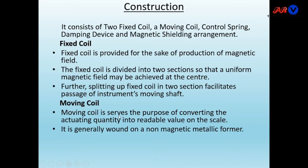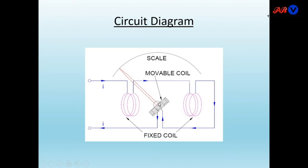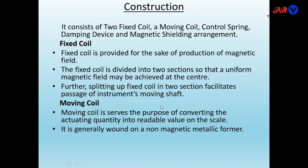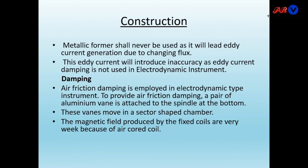The moving coil serves the purpose of converting the activating quantity into a readable value on the scale — the activating quantity can be current or voltage. It is generally wound on a non-magnetic metallic former. A metallic former shall never be used as it will lead to eddy current generation due to changing flux.